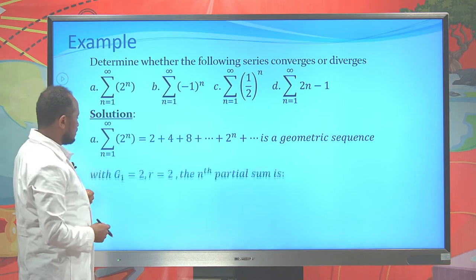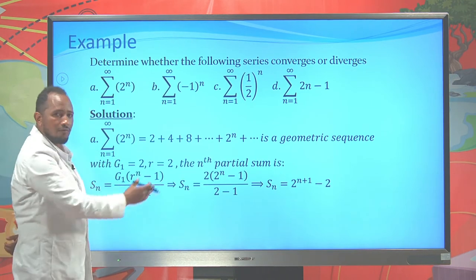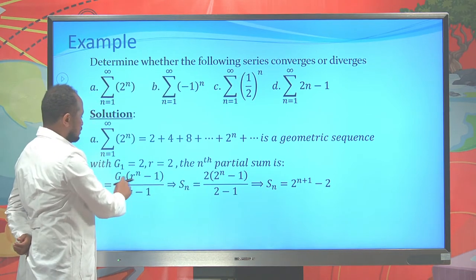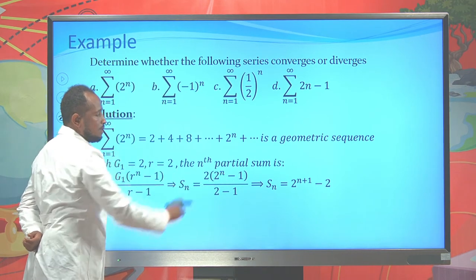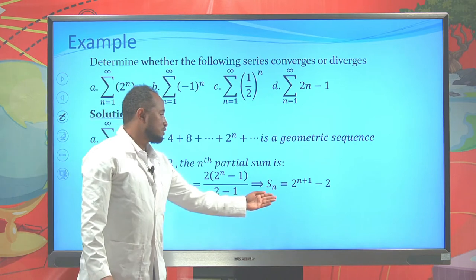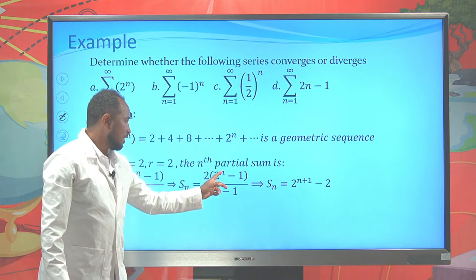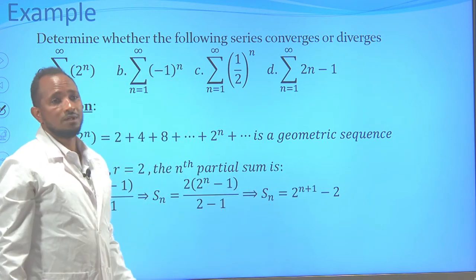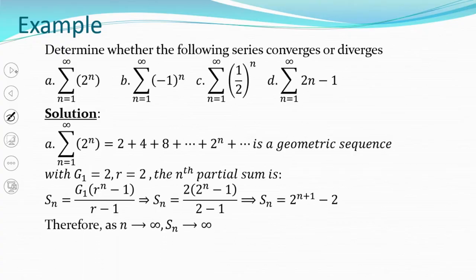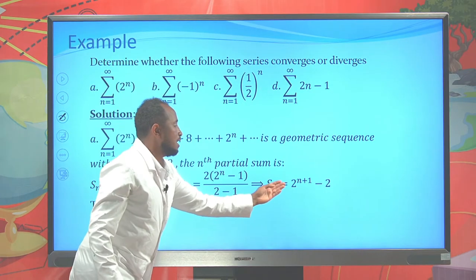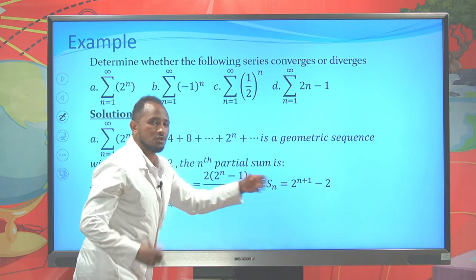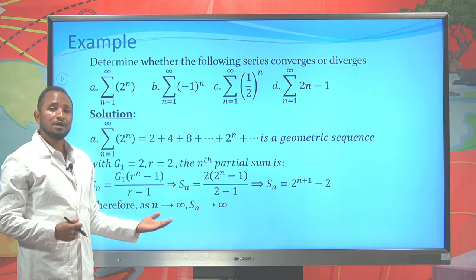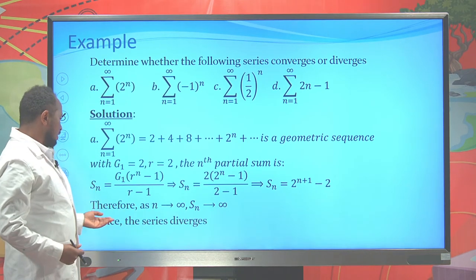Applying the geometric sum formula, S_n = g1 × (r^n − 1)/(r − 1), with g1 = 2 and r = 2, we get S_n = 2^(n+1) − 2. Taking the limit as n goes to infinity, this goes to infinity. Since we did not find a finite unique number, the sequence of partial sums diverges, and hence the series diverges.